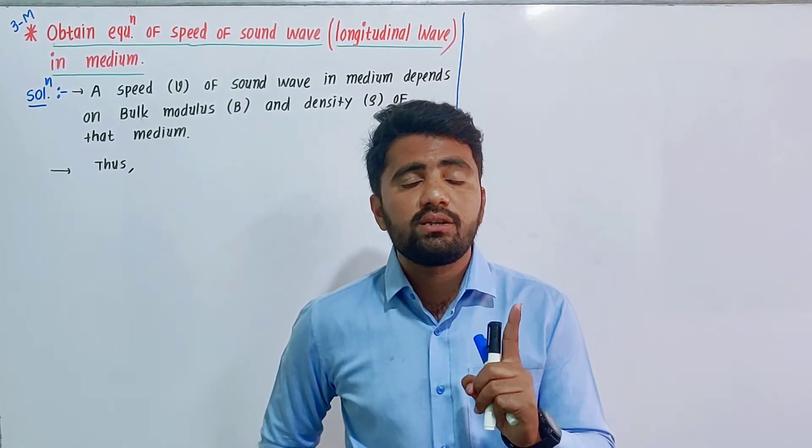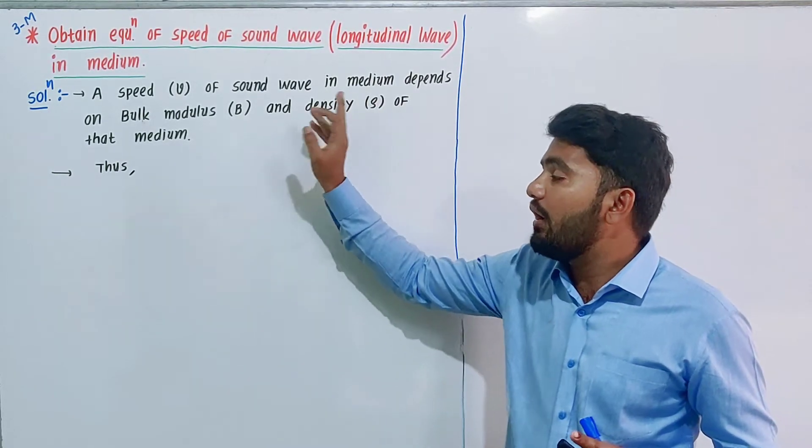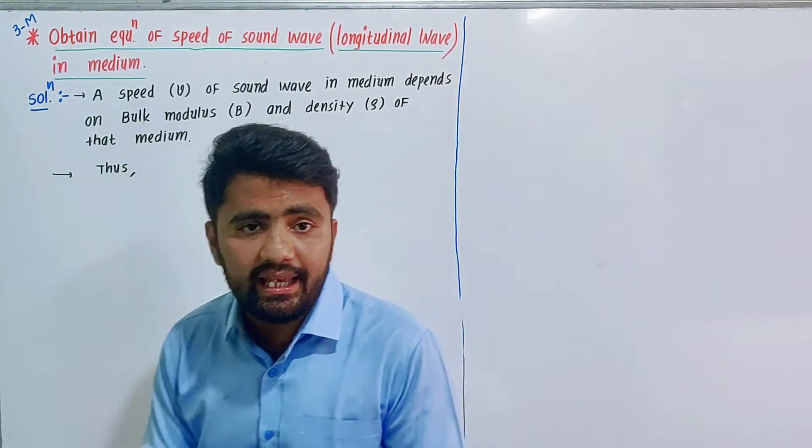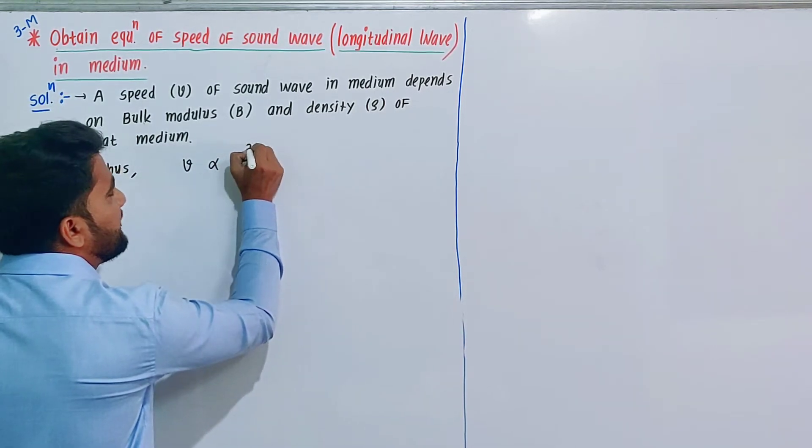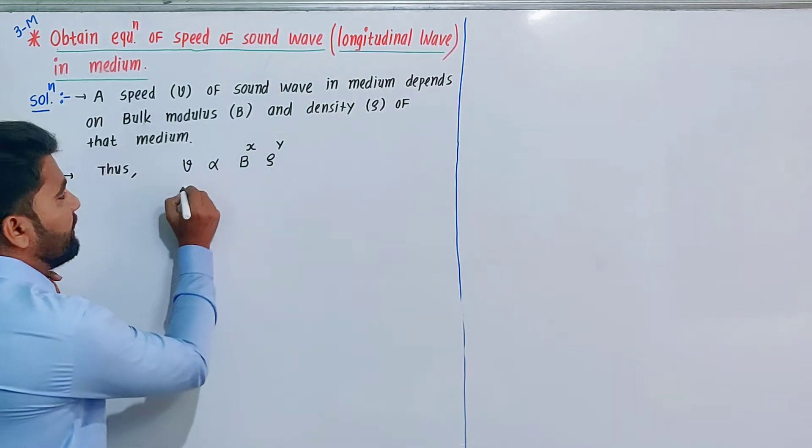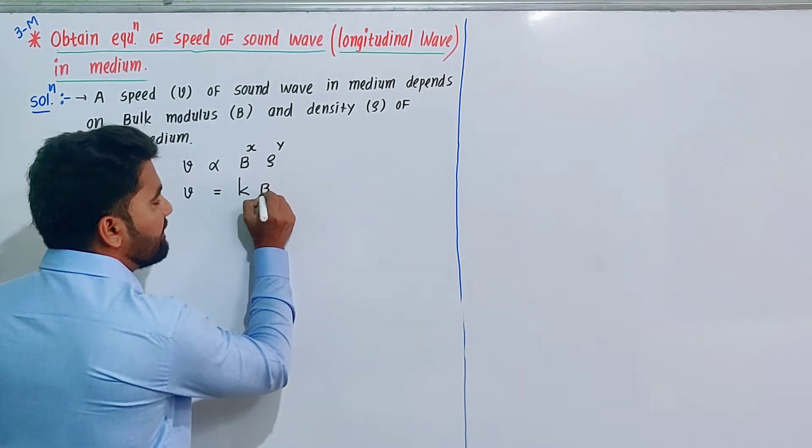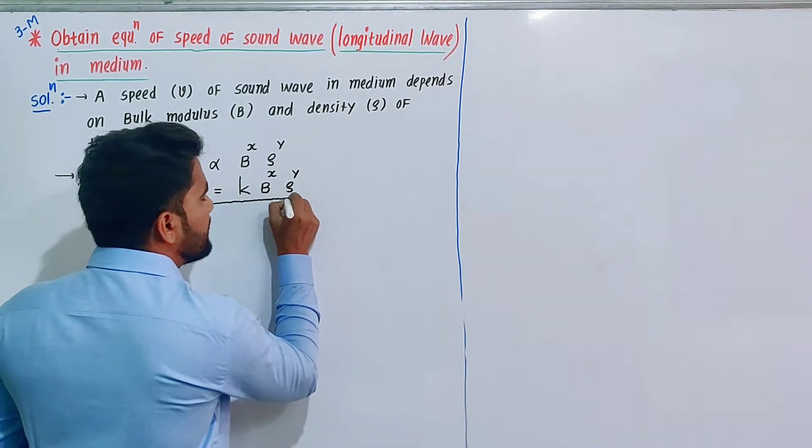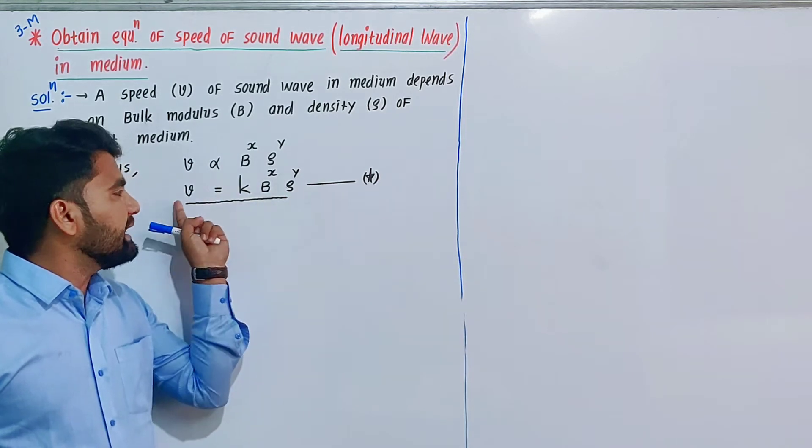Speed of sound wave in any medium depends on first bulk modulus B and density ρ of that medium. So velocity V depends on B and ρ. We solve this using dimensional analysis. Thus V is proportional to B^x and ρ^y. V equals constant K times B^x times ρ^y. This is equation star.